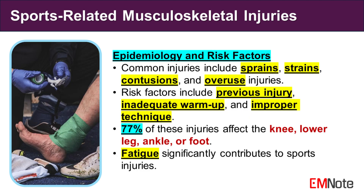Epidemiology and Risk Factors. The prevalence of sports-related musculoskeletal injuries is substantial, with an estimated 8.6 million cases occurring annually in the United States. Sprains, strains, contusions, and overuse injuries are the most frequent types encountered. Several risk factors contribute to these injuries, including previous injury history, inadequate warm-up or cool-down routines, improper technique or training, lack of flexibility or strength, and environmental factors such as playing surface and weather conditions.